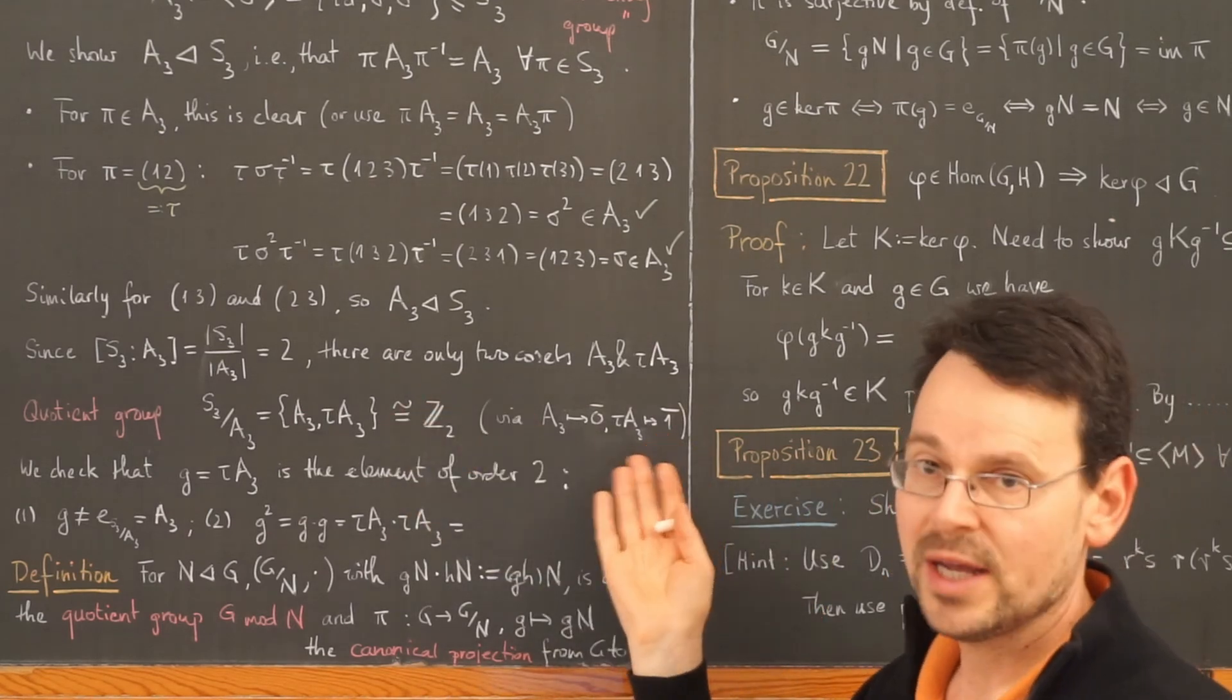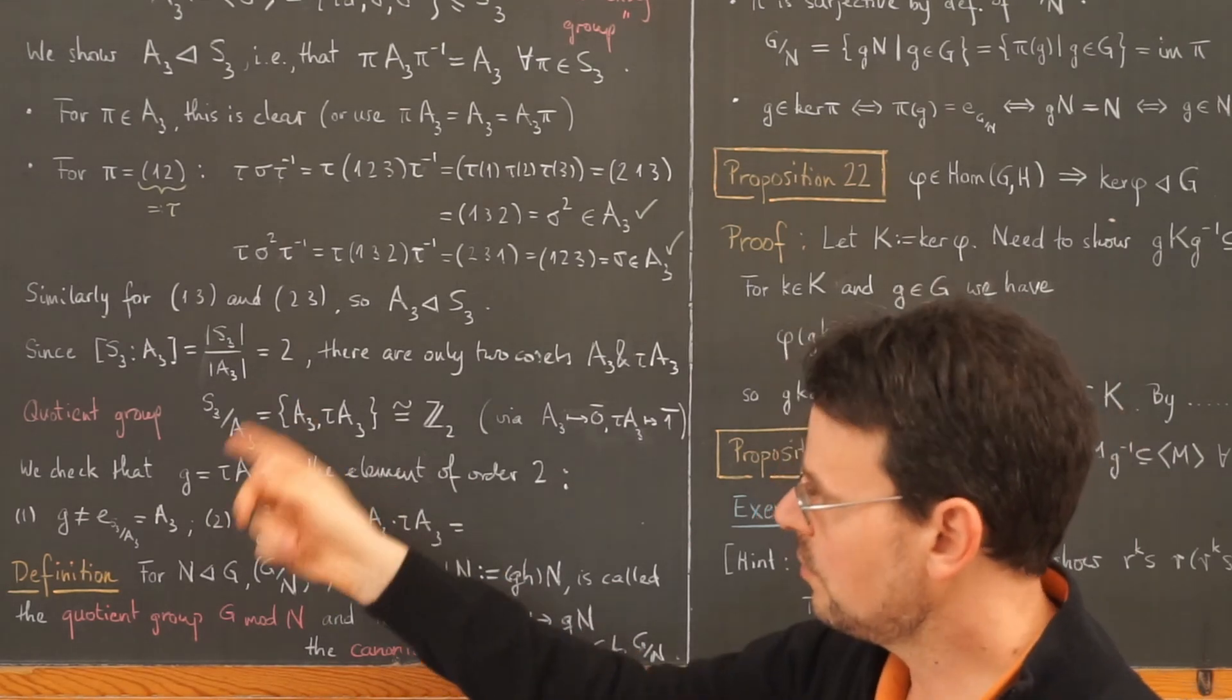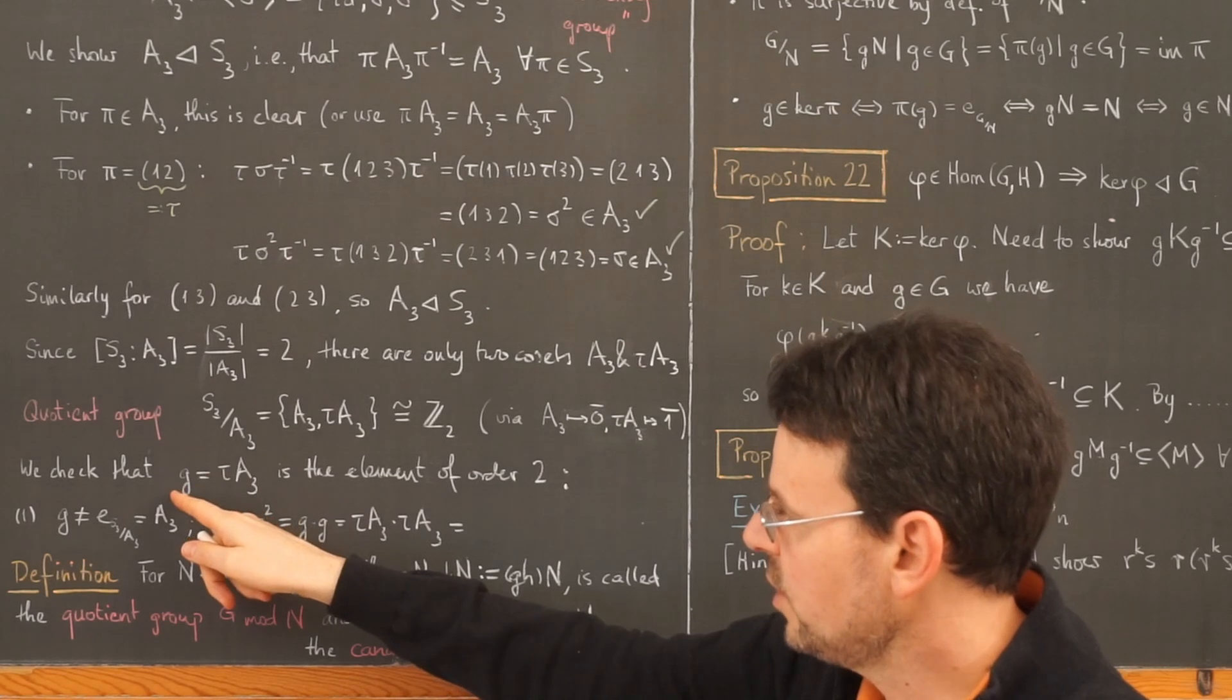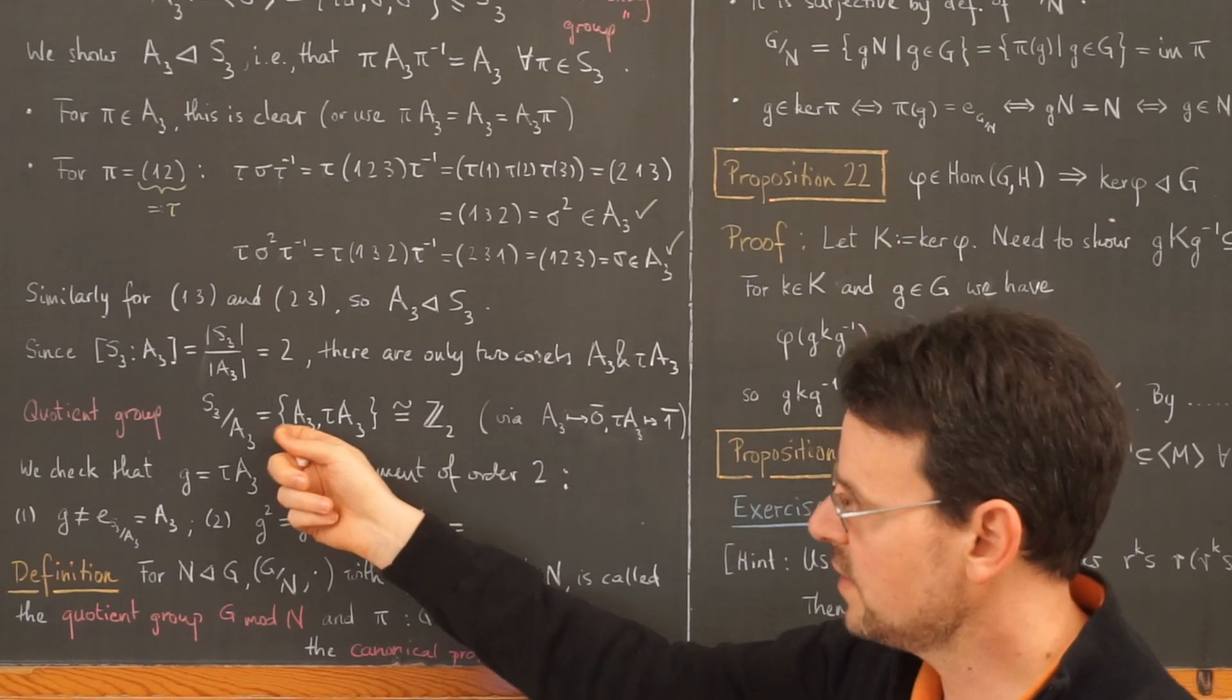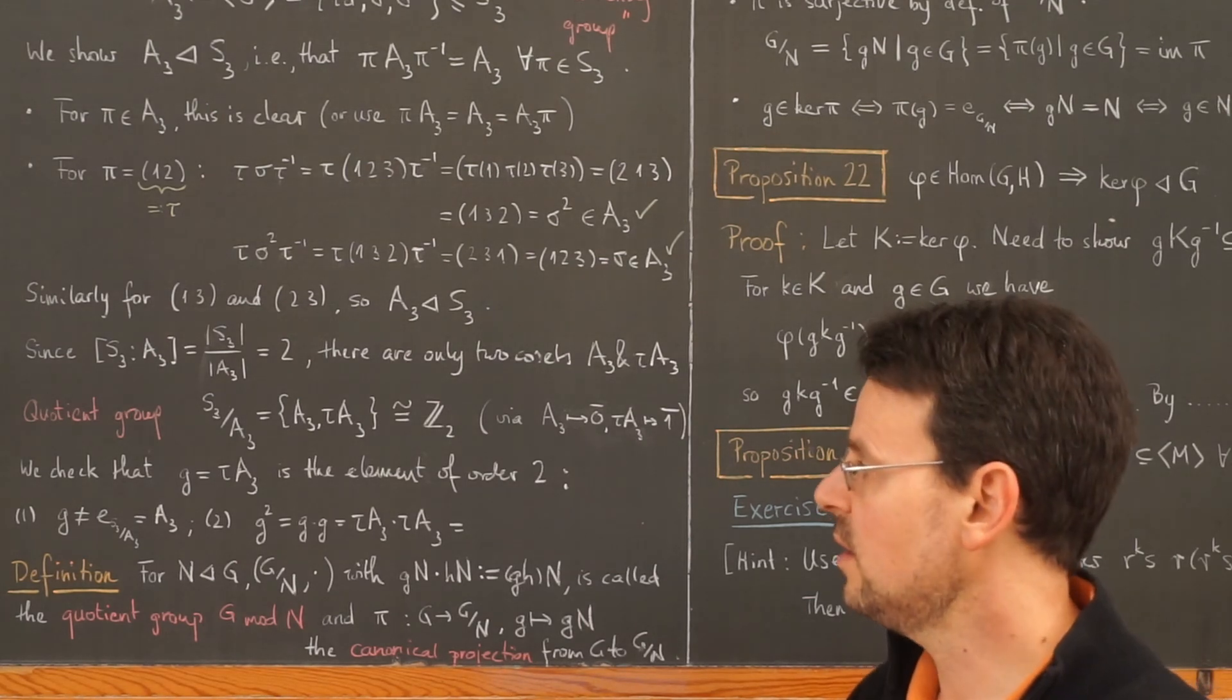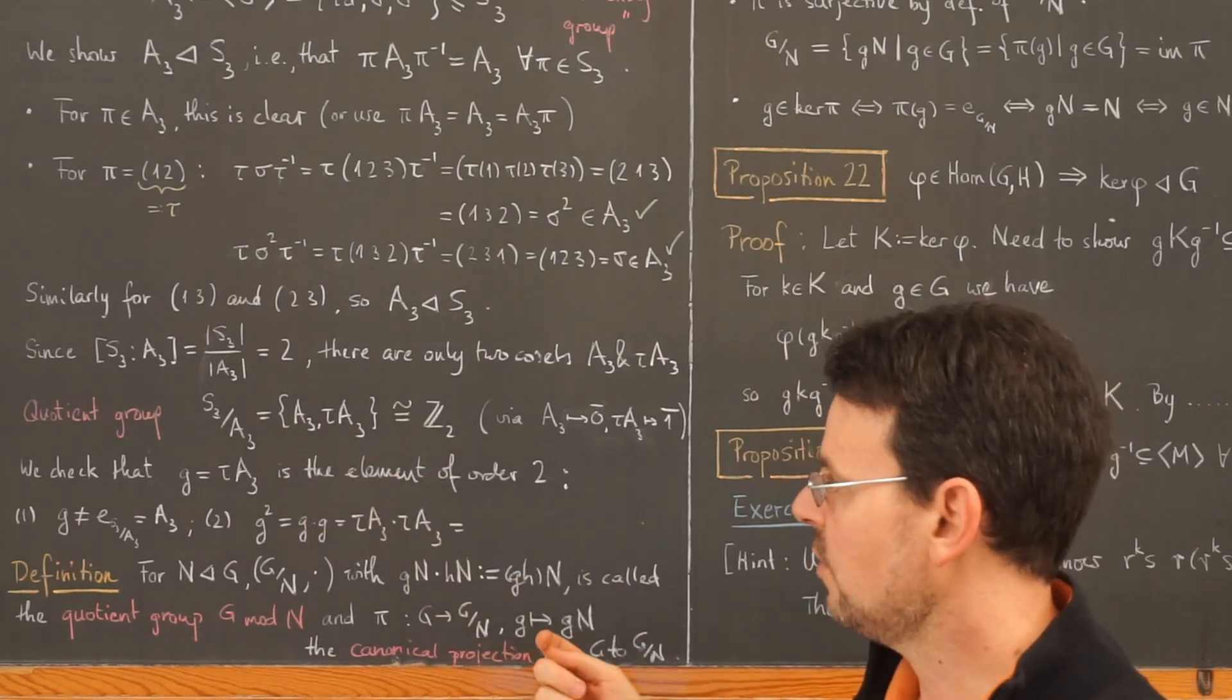And then you can easily check that this is indeed an isomorphism. And just to get used to working with the operation in the quotient group, we check by hand that this here, which I call G, is indeed the one element of order 2. So this here is the identity of this factor group, the left coset of the identity with respect to A3, so this here must be the one element of this group which is of order 2.